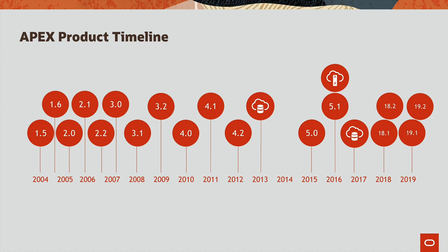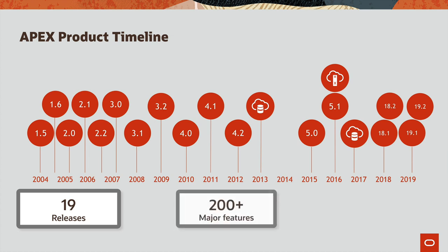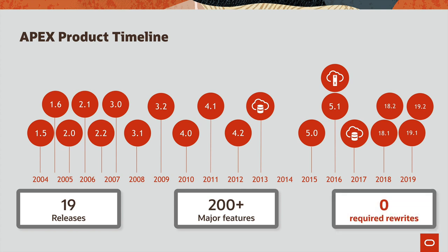Here's a brief timeline of the APEX product. APEX has been around since the initial release of HTML DB 1.5 in 2004. There have been 19 releases with 200-plus major features — and the key thing is zero required rewrites. You can take an application export from HTML DB 1.5 or any subsequent release and import it into the most current version of APEX, and the vast majority of your application will work exactly as it did before.